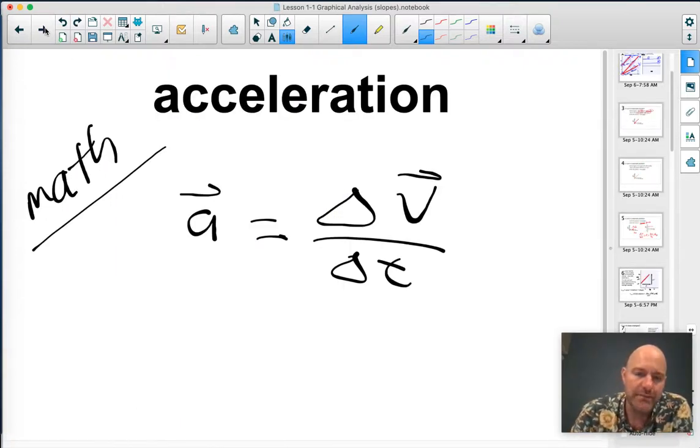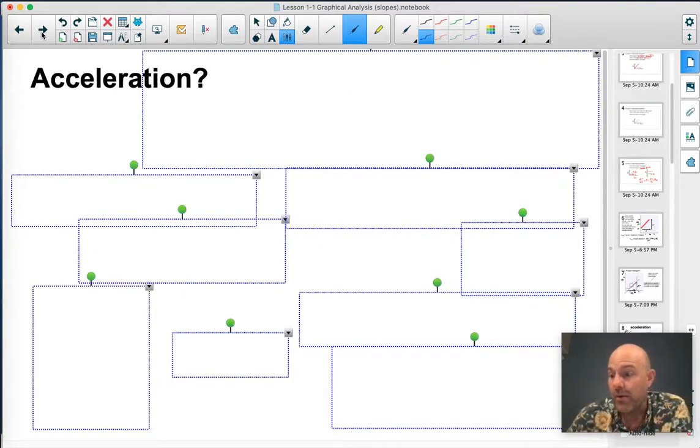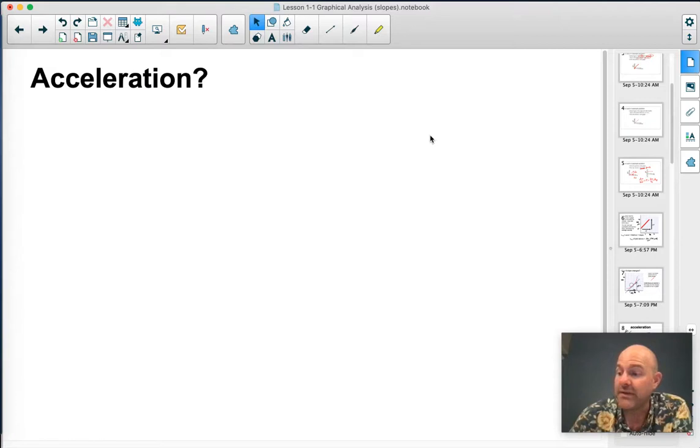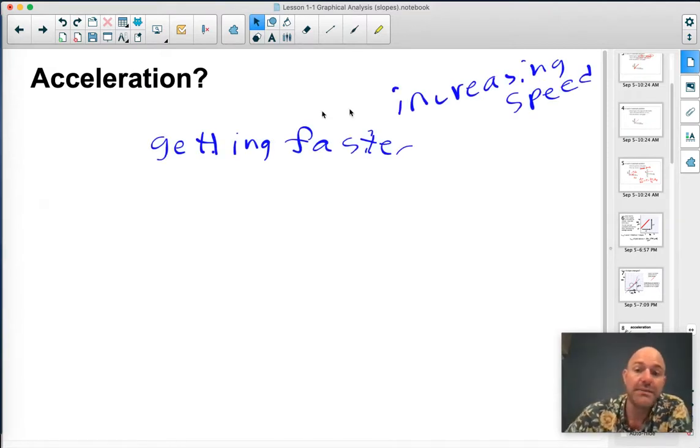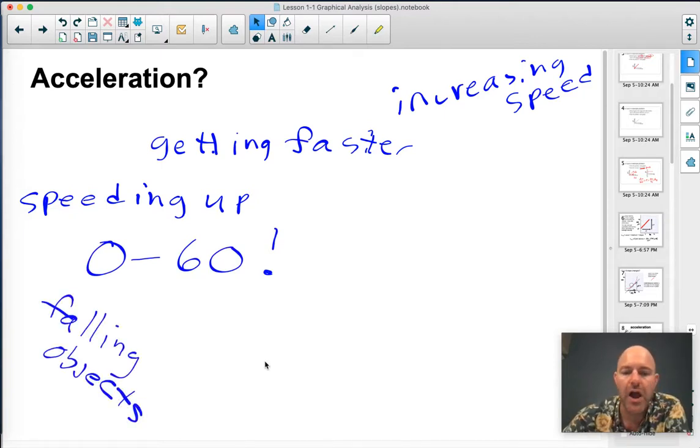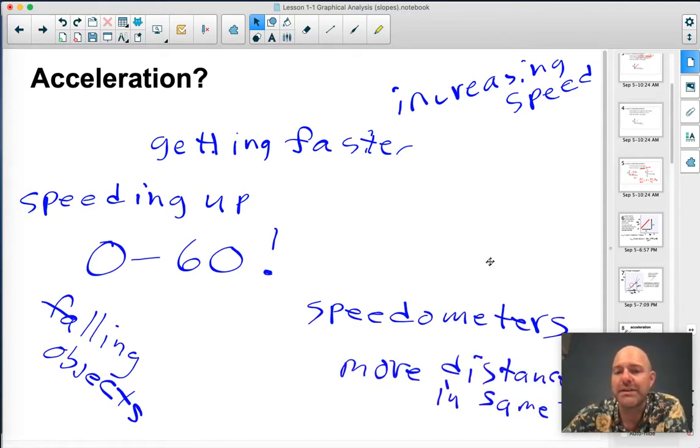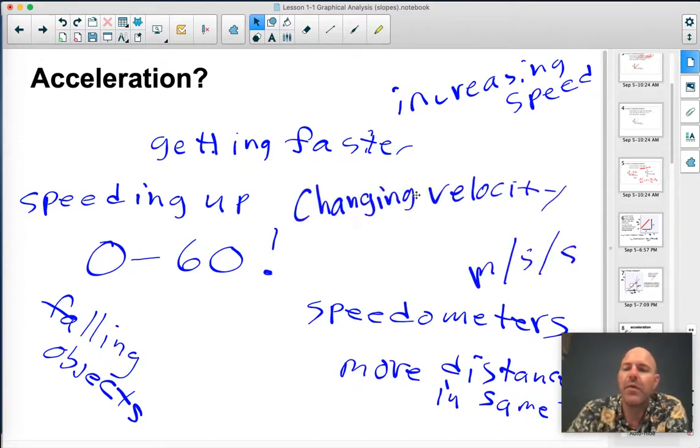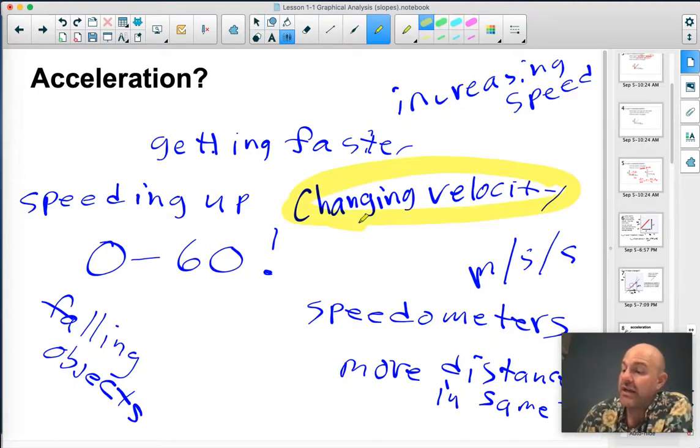So when it comes to acceleration, which is the next concept, the math tells us it's delta v over delta t. This is a changing velocity over time. But when you hear the word acceleration, I'll be honest, a lot of times we think of a lot of different things, right? People say all sorts of things, increasing speed, getting faster. People say speeding up. You might think of in car terms, zero to 60. You might think of falling objects as being things that accelerate. You might look at a speedometer and think that tells you something more distance over time. You might think about a rate. But when we're talking about this in physics, what we mean is this one, a changing velocity. If the velocity is changing, this is acceleration.